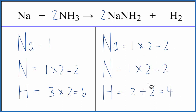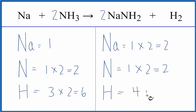Let's update the hydrogen atoms. We have two times two, that gives us four hydrogens, plus these two right here. That gives us six. So the hydrogens are balanced, which is great.